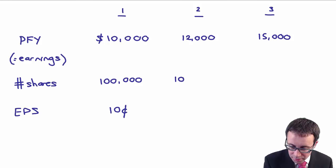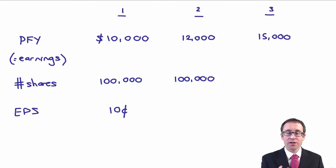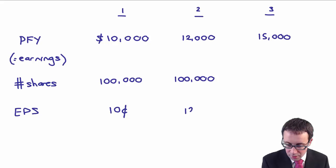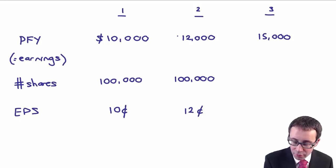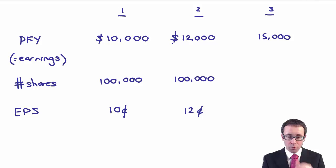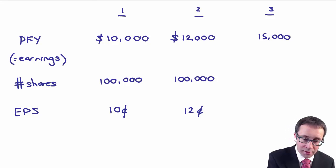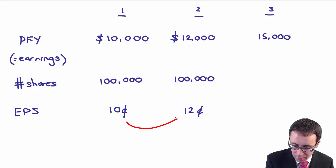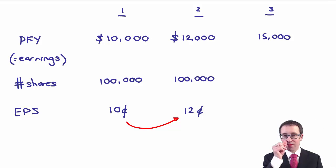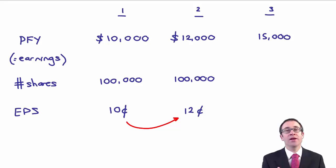If there has been no issue of shares in the second year, so we still have 100,000 shares in issue, then earnings per share is 0.12 dollars per share. The earnings per share has increased, and without any extra finance we've generated more profit — so we've done really well running the business.